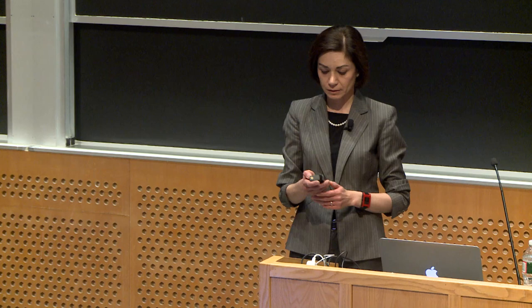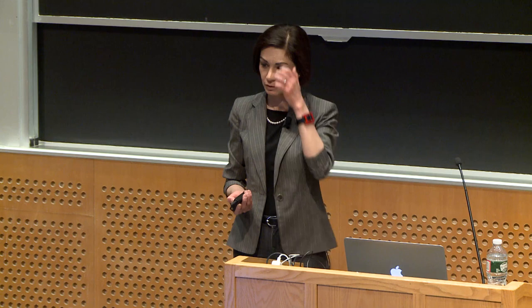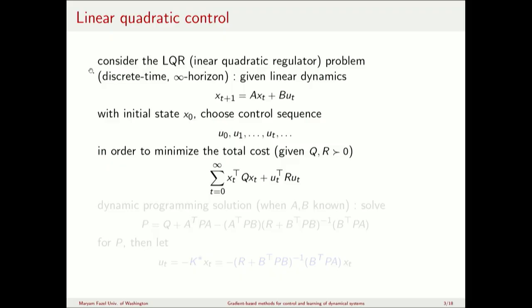This is basically the simplest control problem, well studied in control theory, but we're going to take a different approach to it — updating the policy by taking the gradient of a cost function. Linear quadratic control has linear dynamics and a quadratic cost function of state and input. The state Xt satisfies Xt+1 = A·Xt + B·Ut, a discrete-time linear dynamical system. Continuous-time systems can also be handled.